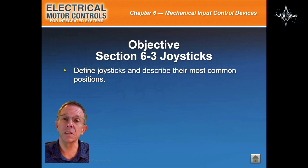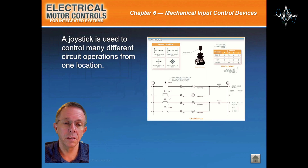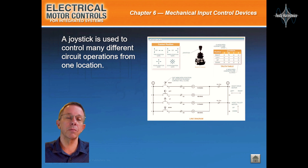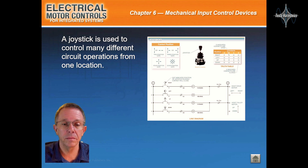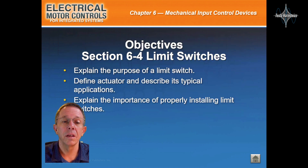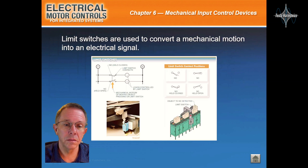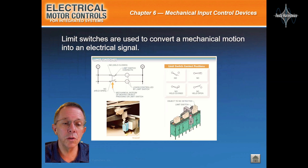Section 6-3: Joysticks. A joystick is used to control many different circuit operations from one location. Section 6-4: Limit Switches. Limit switches are used to convert a mechanical motion into an electrical signal.